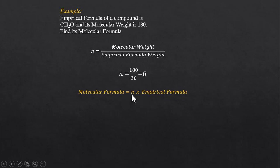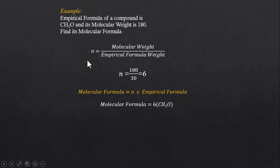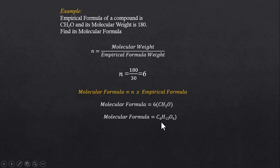Now, n can be multiplied with the empirical formula to calculate the molecular formula. Since we already know the empirical formula is CH₂O, we multiply it by 6, and the molecular formula comes out to be C₆H₁₂O₆.